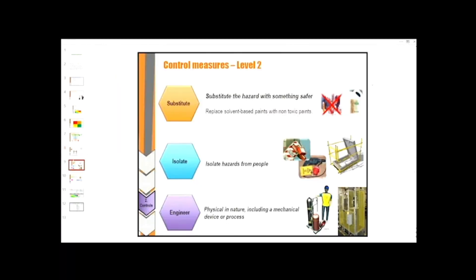Level two: substitution, isolation, and engineering. For example, substitution is replacing a solvent-based product with a non-toxic product. For isolation, isolate the hazards from the people, so we have lockouts, tagouts, and physical barriers. Engineering is physical in nature, including a mechanical device or process, so we have gas bottles attached to a trolley and machinery enclosed with guards.